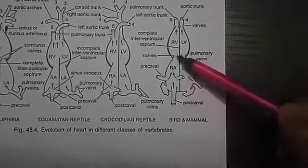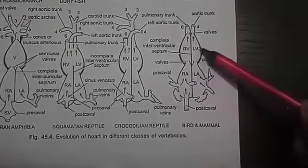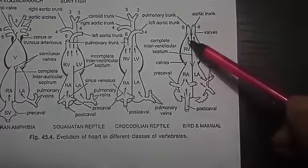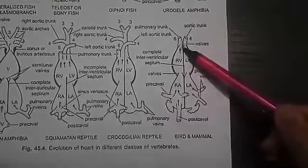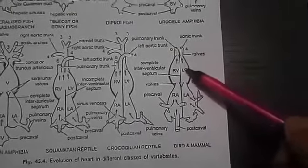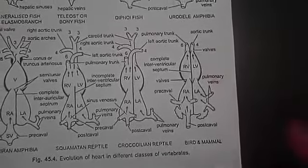That is, the right auricle has separate valve opening into right ventricle, left auricle has separate valve opening into left ventricle. Similarly, right ventricle opens into pulmonary trunk guarded by valve and left ventricle opens into aortic trunk guarded by valve.